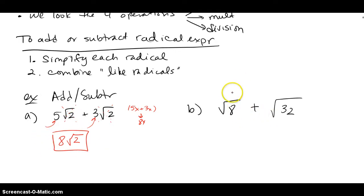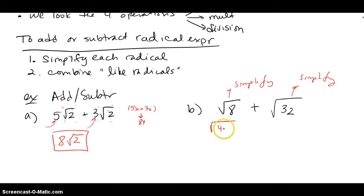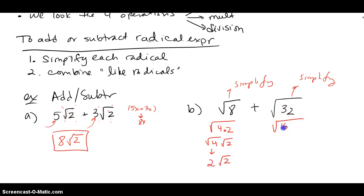For part B, I need to simplify before I do anything. So I'm going to think of 8 as 4 times 2, split that as √4 times √2 — this pops out a 2, so I have 2√2. Then I'm going to think of 32 as 16 times 2, that's going to be √16 times √2, which pops out a 4 and then √2.